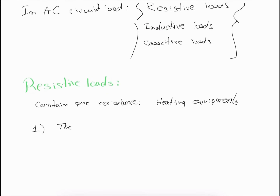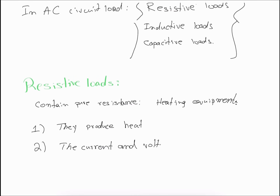The first characteristic: resistive loads produce heat. The second characteristic: the current and voltage are in phase with each other.